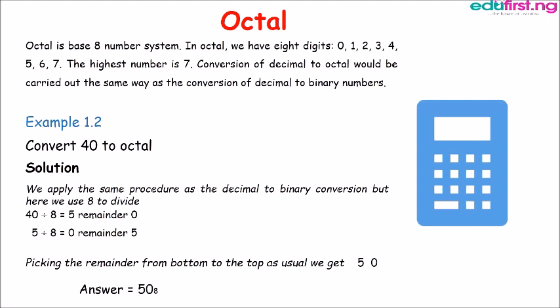5 divided by 8 it can't go, that's 0. The remainder is 5. Now picking the remainder the same way from bottom to the top we get 5 and 0. So the answer is 50 base 8.